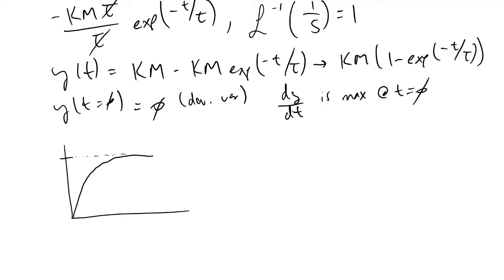Important residence time milestones: at one time constant τ, we are approximately 63% of the way to the new steady-state value, and at five time constants (5τ), we are approximately 99% of the way to the new steady-state value after the step input of magnitude m was applied.